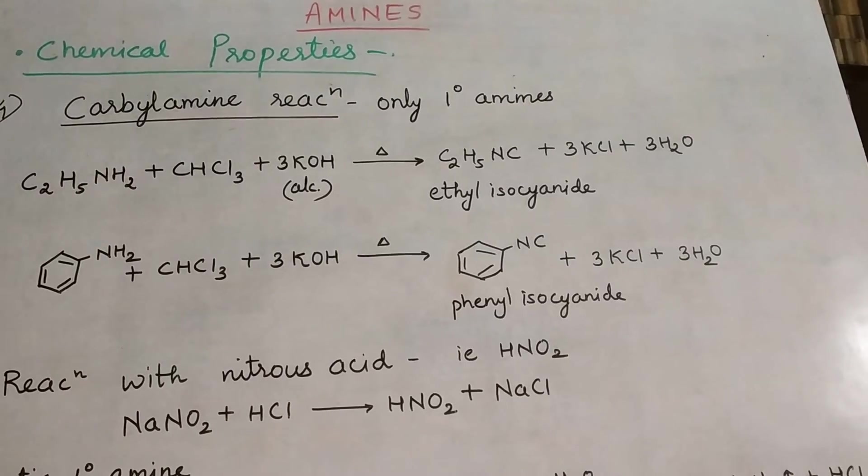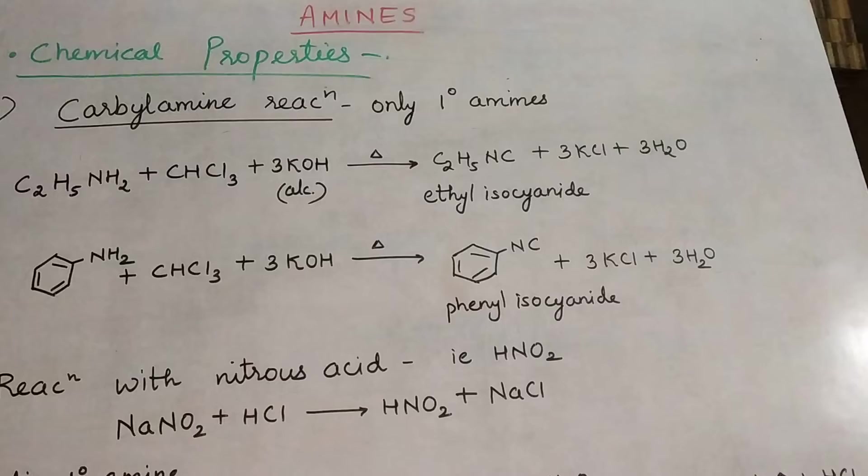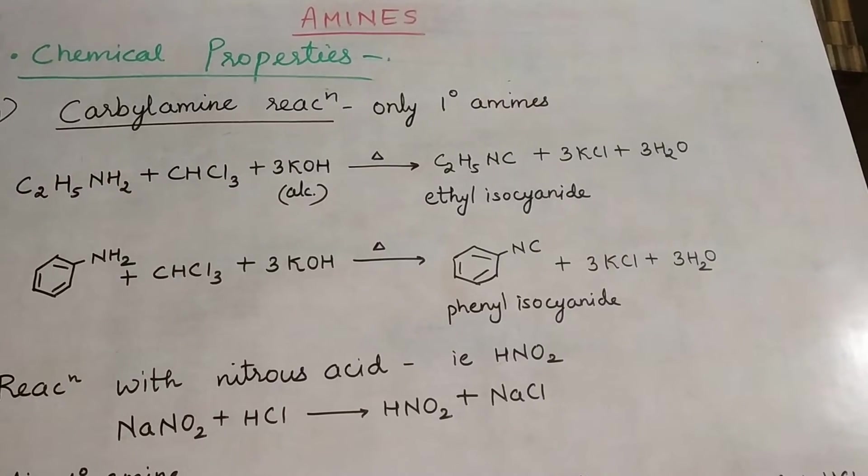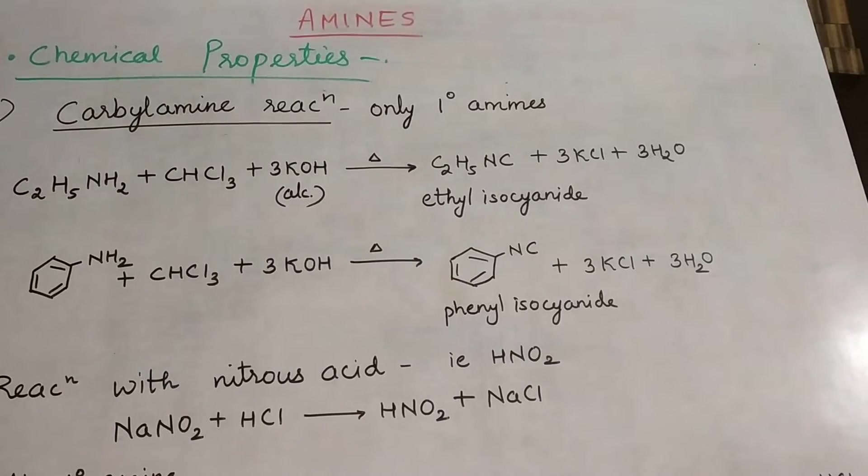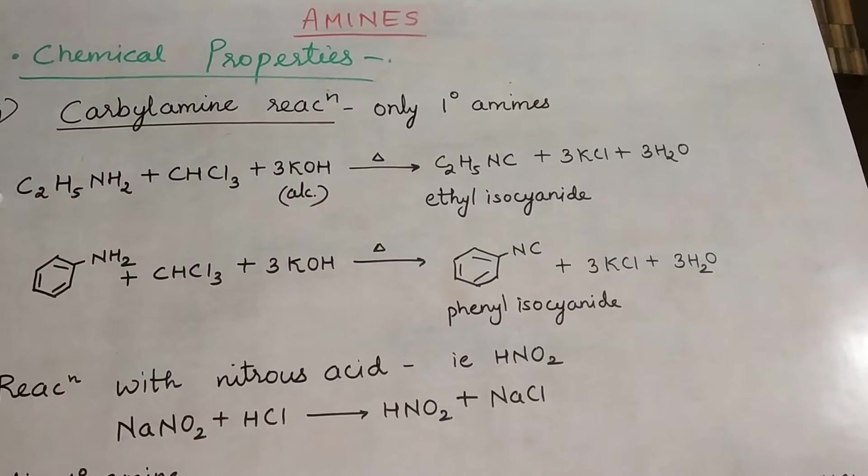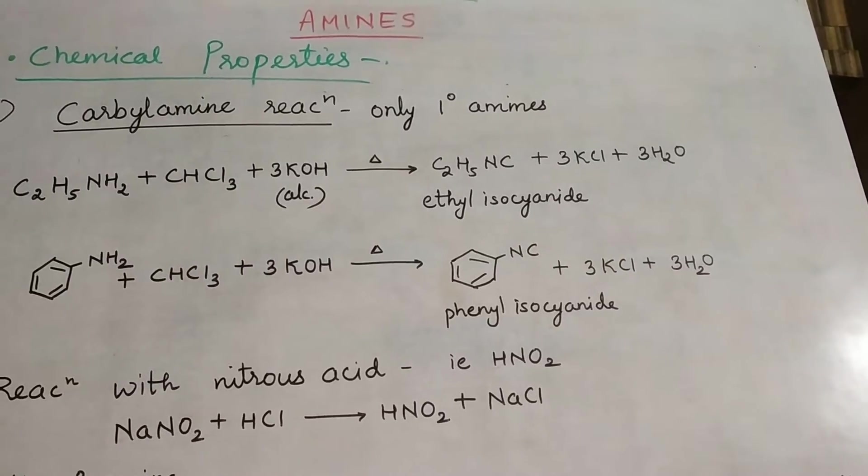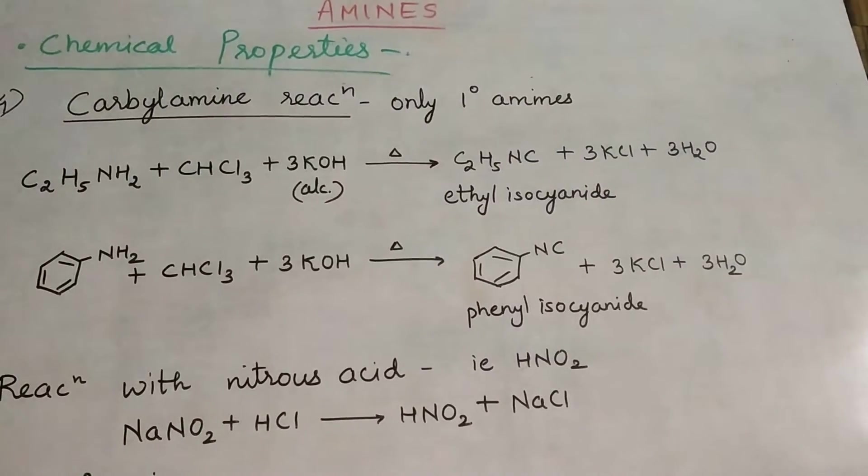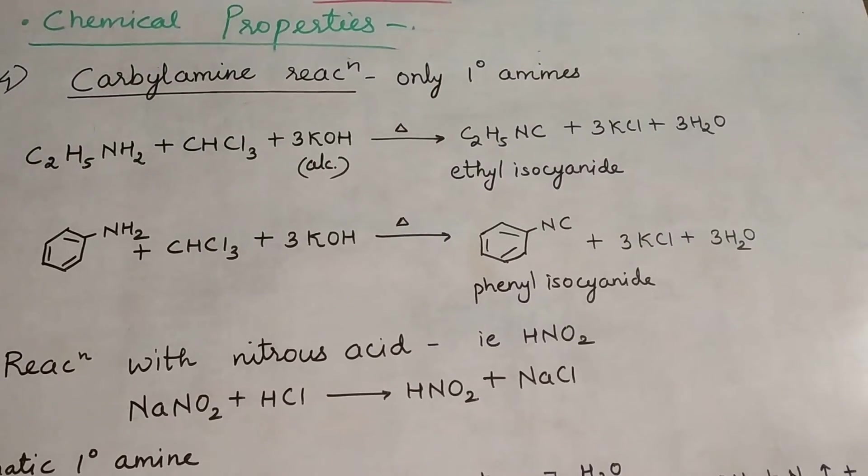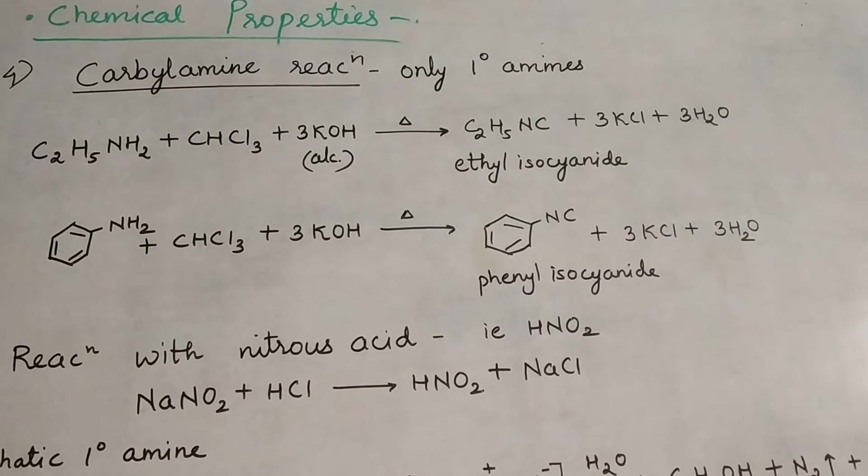The first reaction is with ethyl amine (C2H5NH2), an aliphatic primary amine. In primary amines, nitrogen has two hydrogen atoms and one R group. This is treated with chloroform and alcoholic KOH. The two hydrogen atoms leave, and carbon gets attached to nitrogen, forming NC-type bonding.